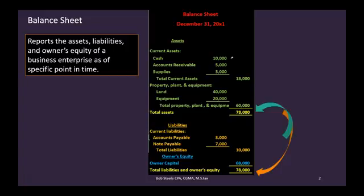The balance sheet is the accounting equation. It has assets, liabilities, and owner's equity. Assets are what the company owns and they're going to use in order to help generate revenue in the future. Liabilities are something that we owe because of some transaction that happened in the past. And equity is going to be what is owed to the owner — it also represents the book value of the company.